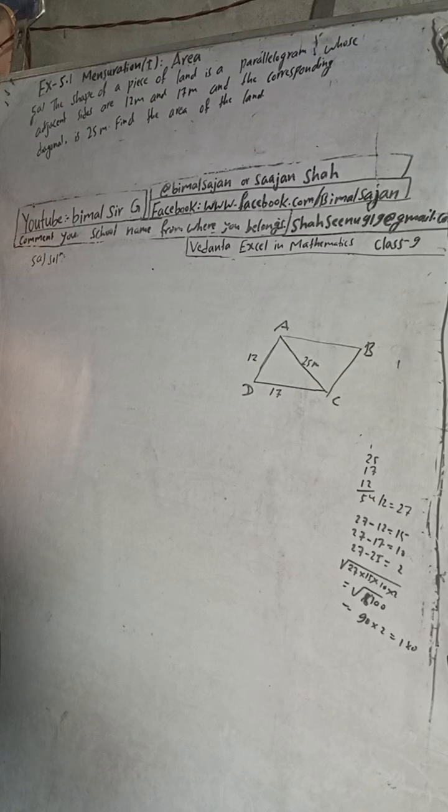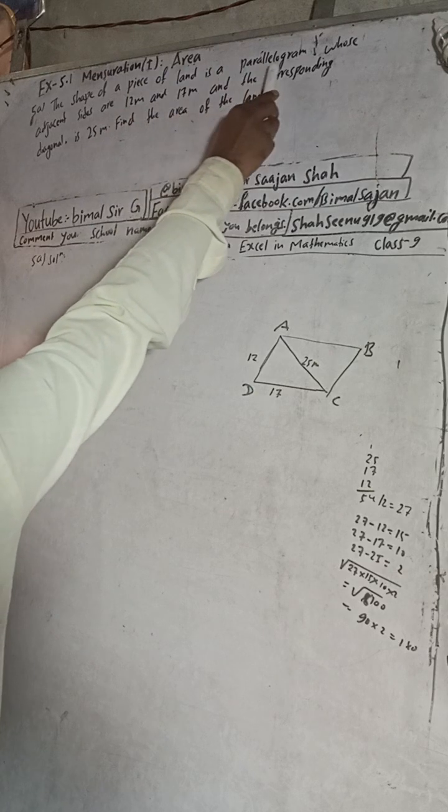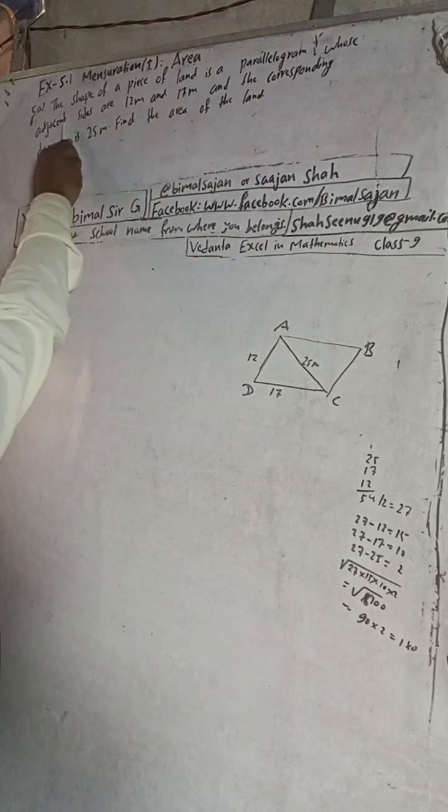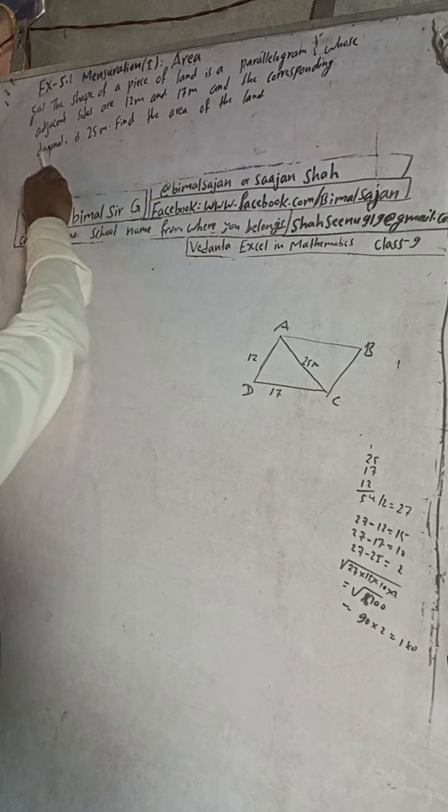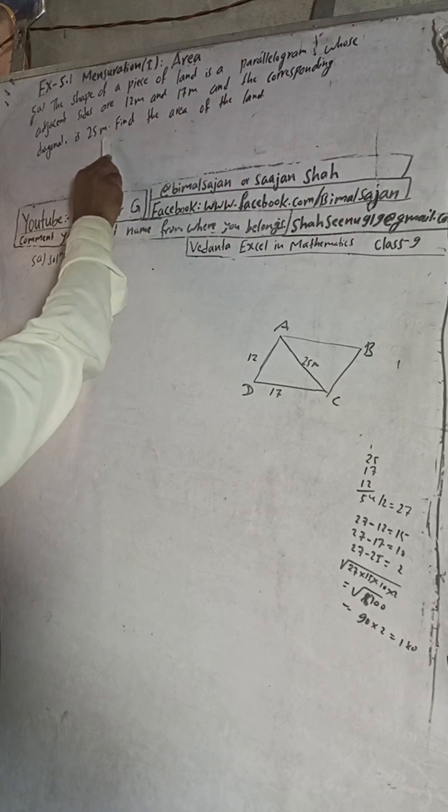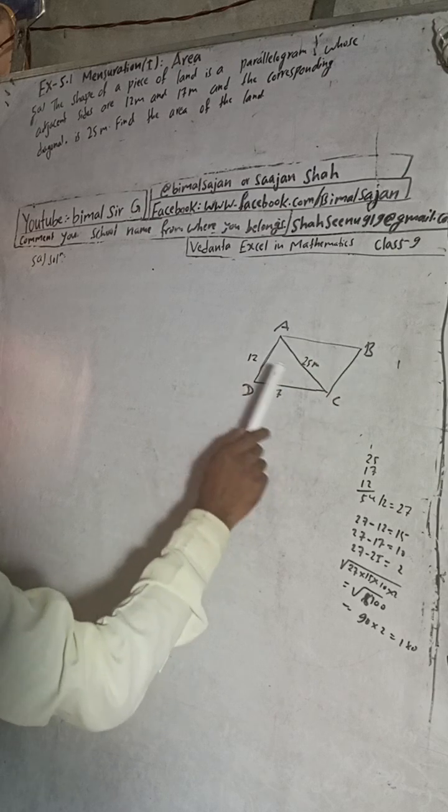Hi class 9 and 10 students, welcome back to Bimalsarji YouTube channel. This is question of 5A exercise 5.1 mensuration, first part area. The question is: the shape of a piece of land is a parallelogram whose sides are 12 meter and 17 meter and the corresponding diagonal is 25 meter. Find the area of the land.